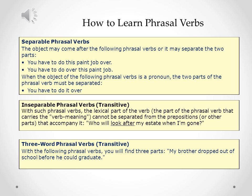The second type is inseparable phrasal verbs with the use of transitive verbs. With such phrasal verbs, the lexical part of the verb — the part that carries the verb meaning — cannot be separated from the prepositions or other parts that accompany it. For example: 'Who will look after my estate when I'm gone?' We cannot split it up; we have to say, 'Who will look after my estate when I'm gone?'